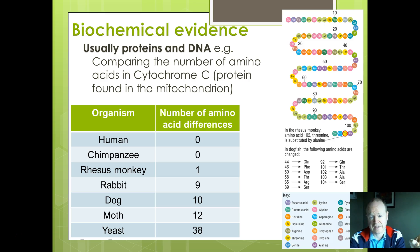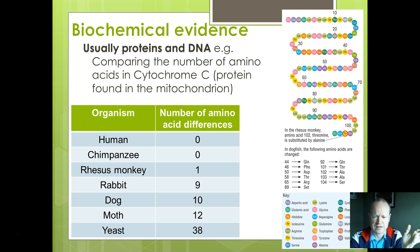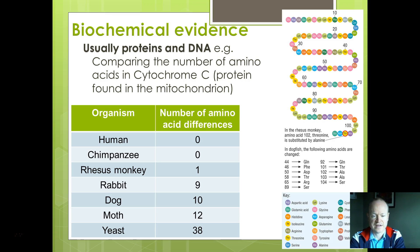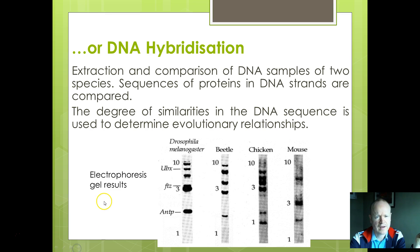The further away an organism is in evolutionary relationship, the more differences there are in those amino acids. Between dogs and humans there are 10 amino acid differences; between yeast and humans there are 38, and so on. Every organism has cytochrome C — it's just that the further it is away from what we have evolved from, the more differences there are.